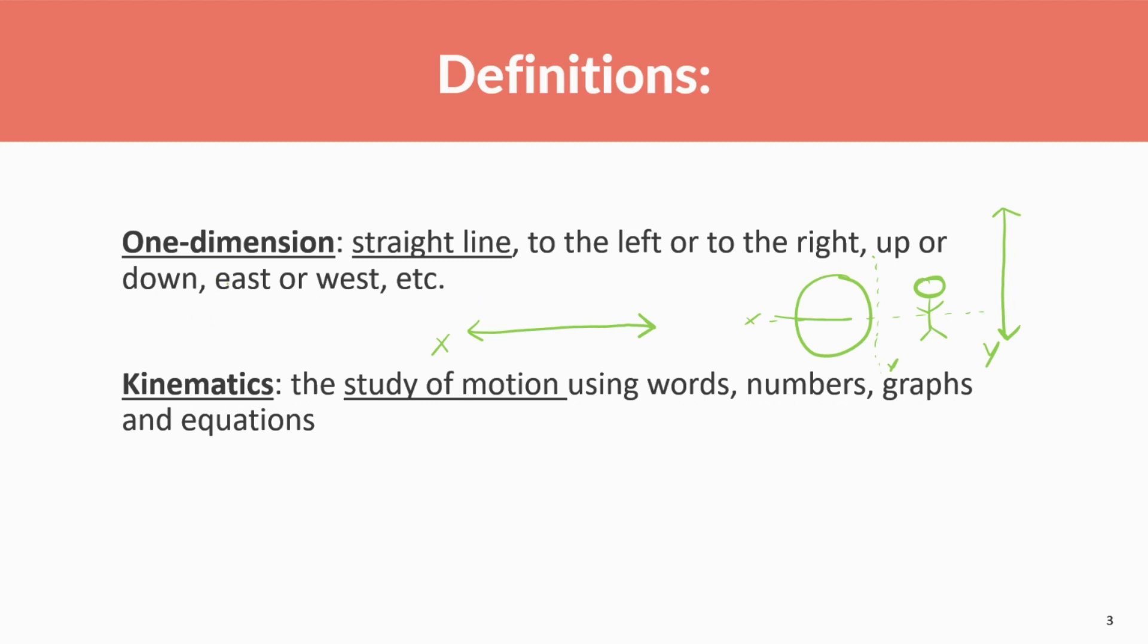So in this chapter, what we're going to be talking about is things that are kinematics, which is the study of motion using words, numbers, graphs, and equations in one dimension. Okay, so one dimension, meaning it's either going to be problems that are left to right or east to west or problems that are up and down north to south and so on and so forth.